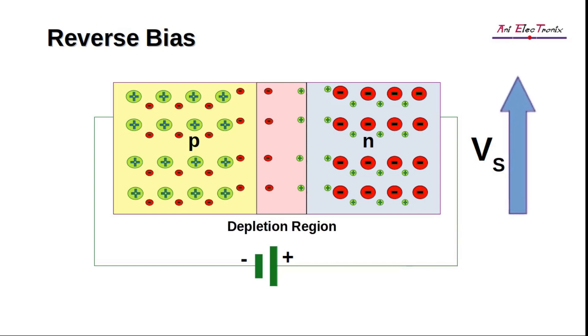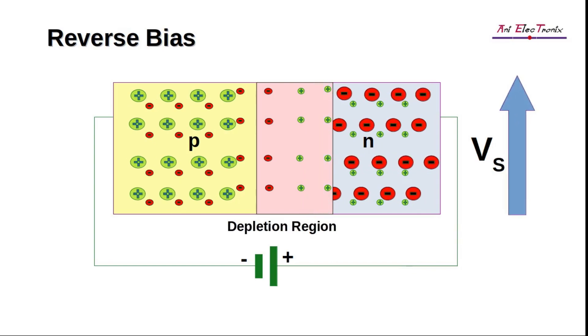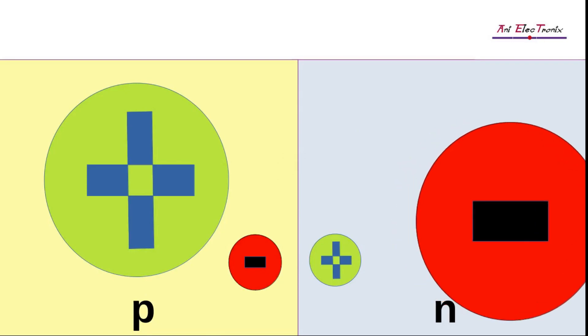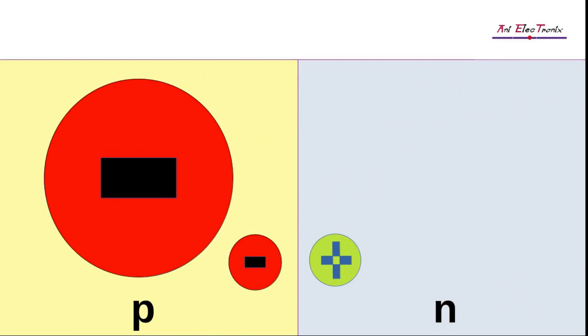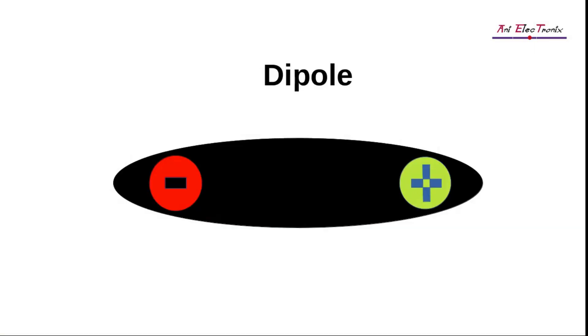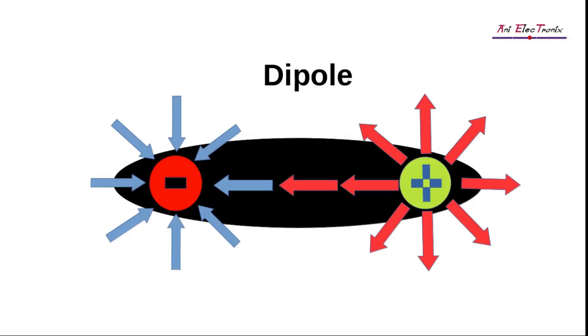With increasing source voltage, the depletion region or barrier potential will increase, and no charge carrier will be able to pass through it. In reverse bias, the barrier potential has a high resistance and acts like a dielectric medium. Within the depletion region, immovable newly developed ions form dipoles, and we know that a dipole is associated with an electric field or electric force. Thus, it can be concluded that the charges are stored in the depletion region in the form of electric fields.